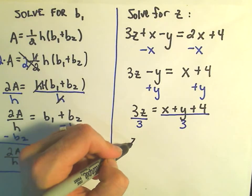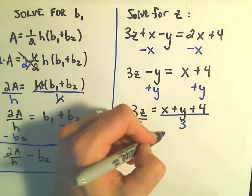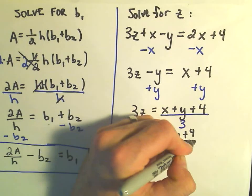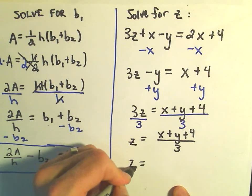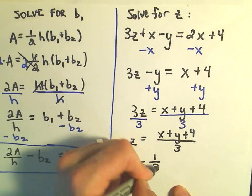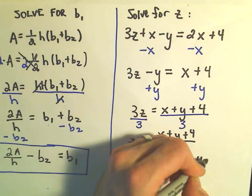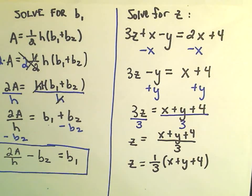So on the left side, we just have 1z, and we could either write the right side as x plus y plus 4 over 3, or equivalently, we could rewrite that as one-third times the quantity x plus y plus 4. And now we've got our solution.